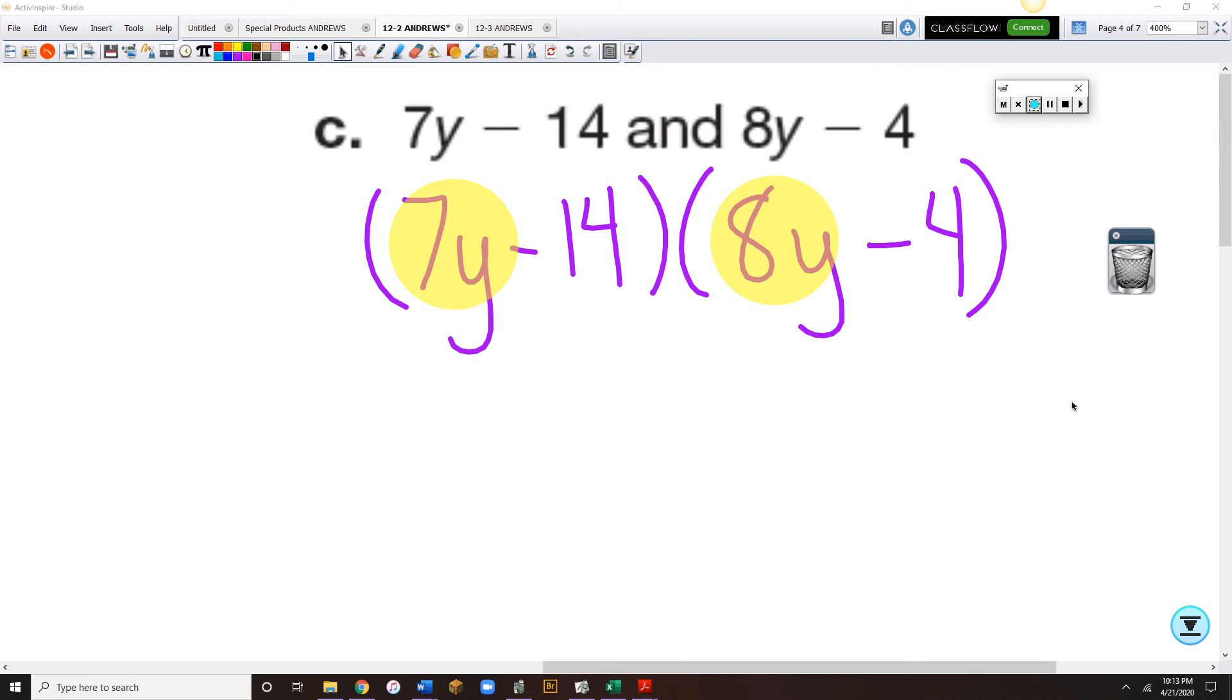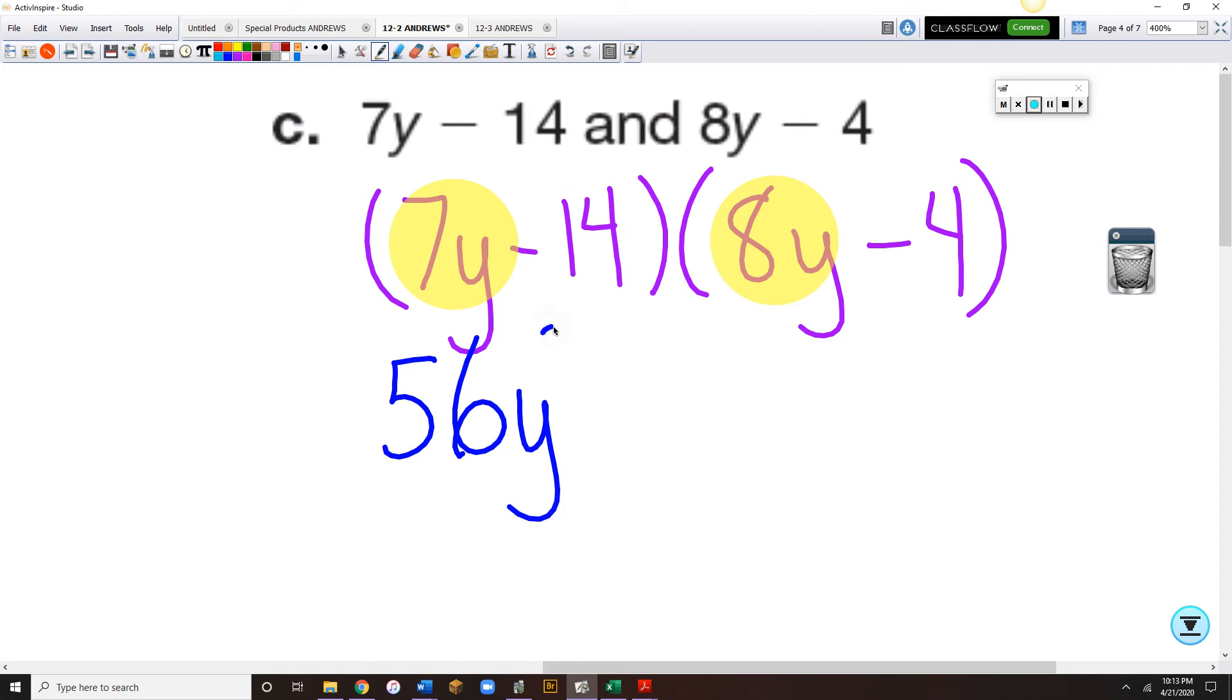Okay, so C, we've got 7y minus 14, multiplying 8y minus 4. 7y times the 8y would be 56y squared.